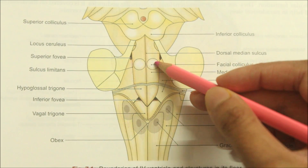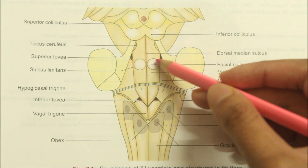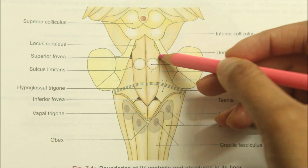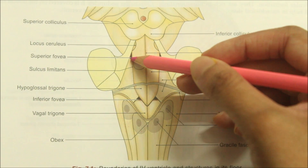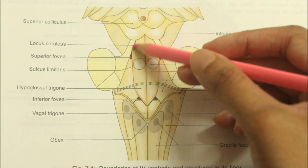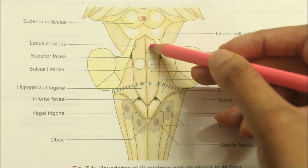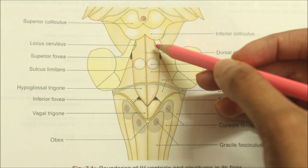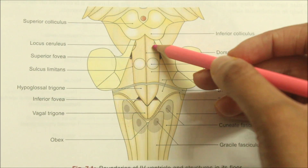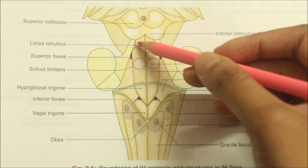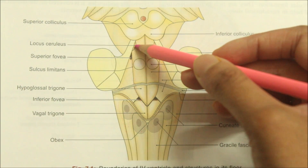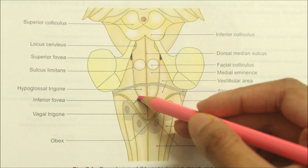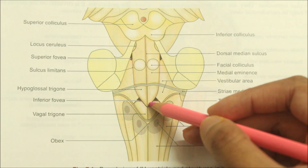The medial eminence presents a facial colliculus just opposite to and medial to the superior fovea. In the uppermost — that is, the pontine — part, the sulcus limitans overlies an area called the locus ceruleus, which is bluish in color due to the presence of pigmented neurons. These neurons belong to the reticular formation, are rich in noradrenaline, and help in paradoxical sleep.